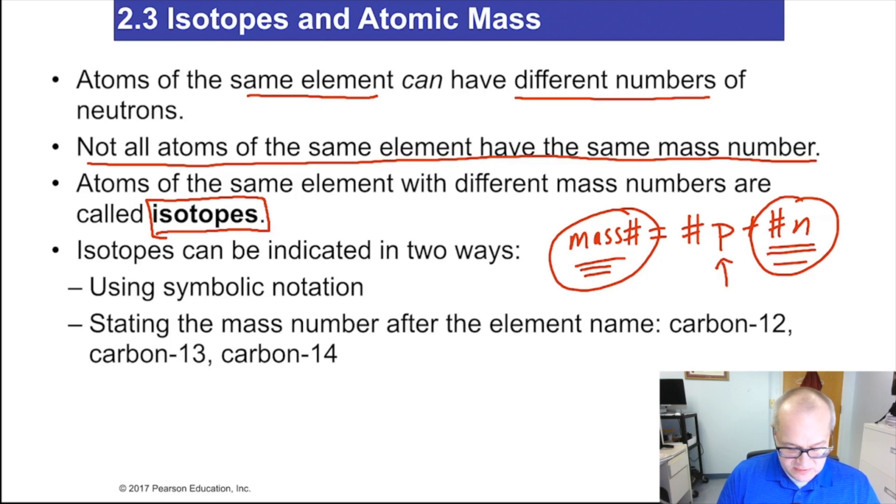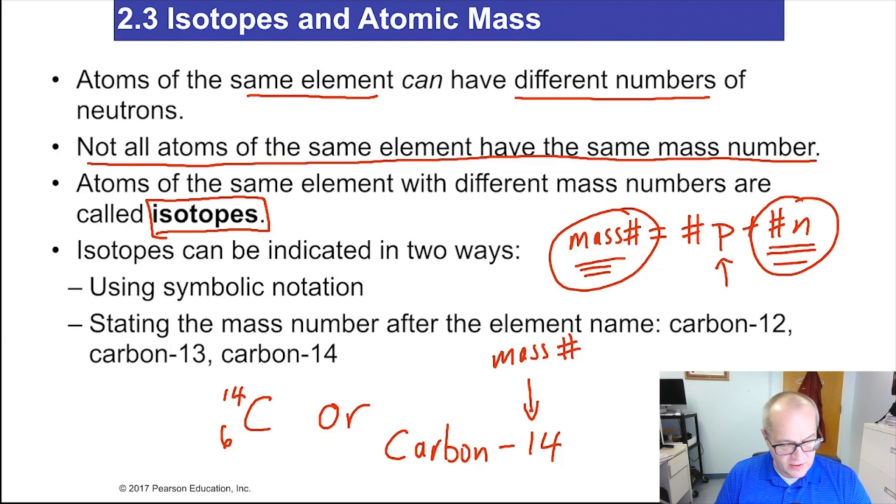Isotopes can be expressed in two different ways. We've already seen one way, the symbolic notation. Say we have carbon-14 with atomic number six, or you could say carbon dash 14, where that is a mass number. Both of these are acceptable ways of expressing isotopes.